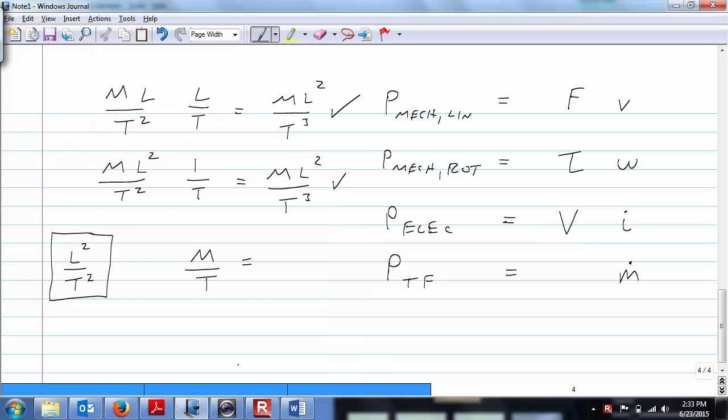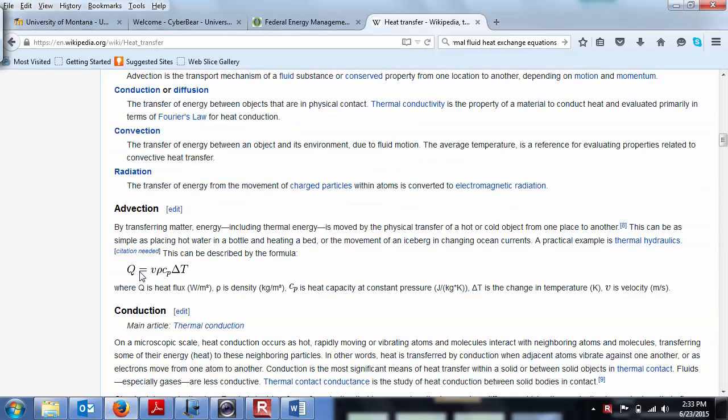Okay, so I found the equation we were looking for, and we'll do the same dimensional analysis on that to make sure it's correct. So let's go back here to the site. What we're looking at is Q equals V rho C sub P delta T. So heat flux is exactly what we're looking for. You can see that it's in units of watts per square meter, which is kind of nice.